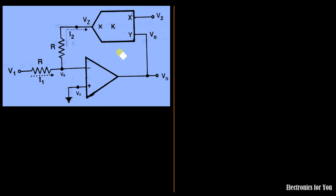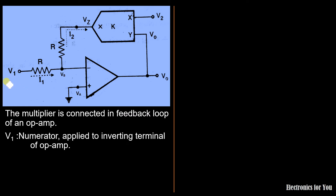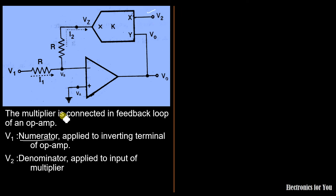This is the circuit used for analog divider using multiplier. The multiplier is connected in the feedback loop of the op-amp. It is an inverting op-amp, so the input V1 is applied to the inverting terminal — V1 works as the numerator. V2 is applied to the X input of the multiplier and works as the denominator. The Y input of the multiplier is connected to the output voltage, so Vy equals Vo.